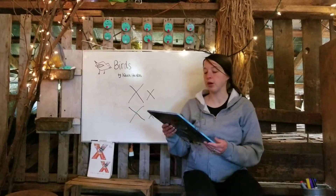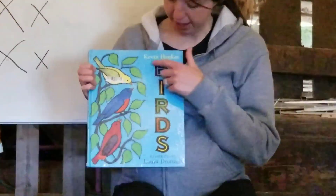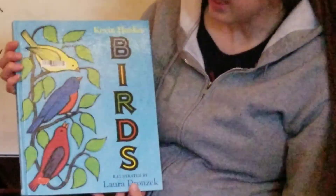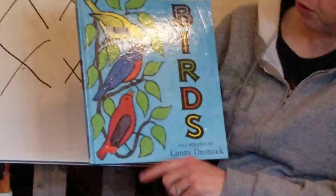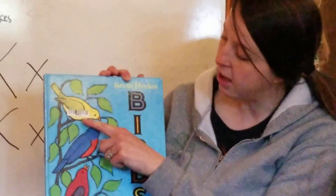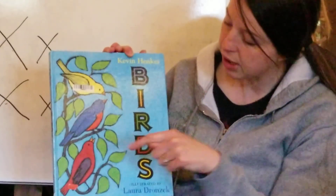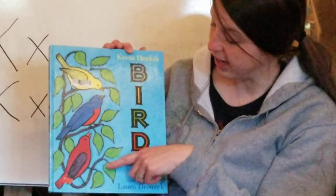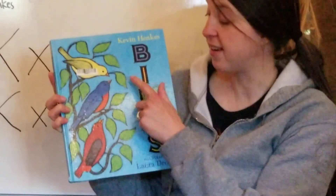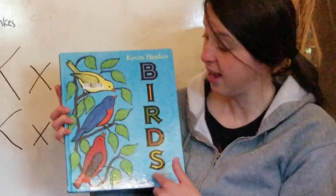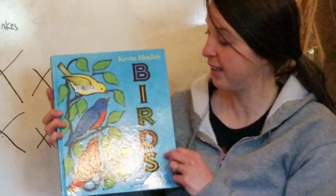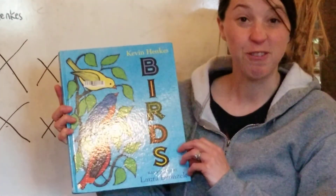Let's go ahead and read our book. This is called Birds by Kevin Henkes, illustrated by Laura Dronsick. Look at these beautiful illustrations — it looks like she might have painted them, maybe drawn a little. We have a yellow bird on the front, a blue bird, and a red bird. They look like they might be in a tree or a bush. By the title and all the birds and trees, this book is definitely going to talk about birds. Have you guys been watching for birds out your window? There are so many.